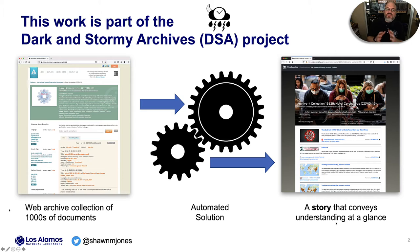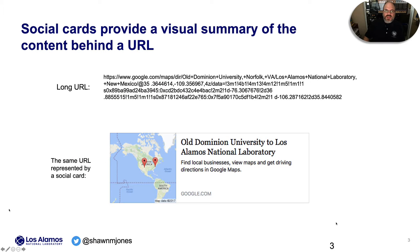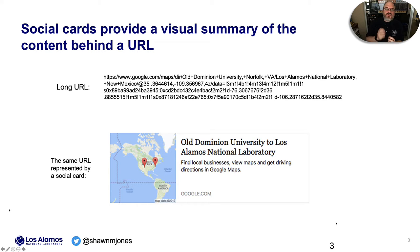This work is part of the Dark and Stormy Archives project, where we take web archive collections of thousands of documents, feed it through an automated solution, and produce a story that conveys understanding at a glance for this collection. We're interested in summarizations and visualizations of documents, and social cards provide a visual summary of the content behind a URL.